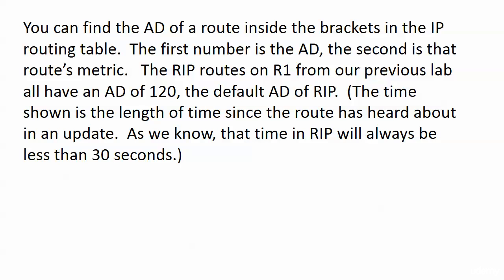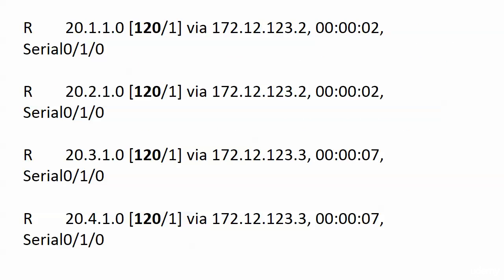We saw one admin distance in particular quite often in the last couple of videos, and that was RIP's AD of 120. You can always find the administrative distance of a route inside the brackets in the IP routing table. You'll have two numbers there: the first one is the AD, and the second one is that route's metric. The RIP routes on R1 from our previous lab all had an AD of 120, which is the default AD. The R stands for RIP, then we have our subnets, and then in the brackets, 120 slash 1 — 120 is the AD, 1 is the metric. Those metrics will get bigger with EIGRP and OSPF, but for RIP a metric of 1 is understandable — we know that's a hop count.